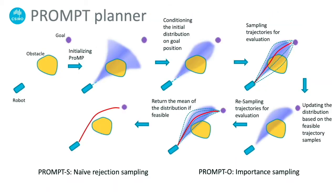We present two algorithms: PROMPTS, which uses naive rejection sampling on the conditional distribution, and PROMPTO, which performs stochastic optimization using importance sampling on the conditional distribution.